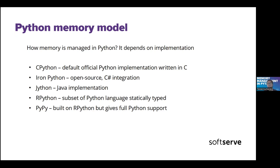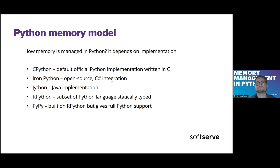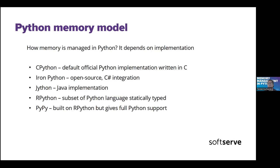Other implementations include RPython. It is a subset of Python, with one slight difference — it is statically typed. Its advantage is the possibility to precompile code, making Python libraries and tools run much faster than the default implementation. The last one is PyPy, which is built on RPython, so it has all the advantages of RPython, but in contrast to RPython, it allows full coverage of the Python library.